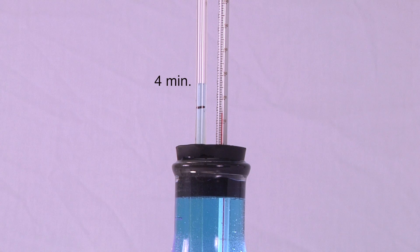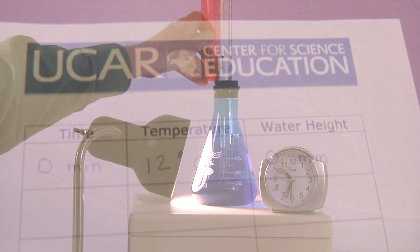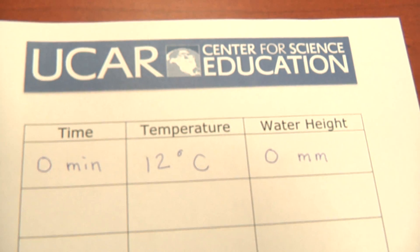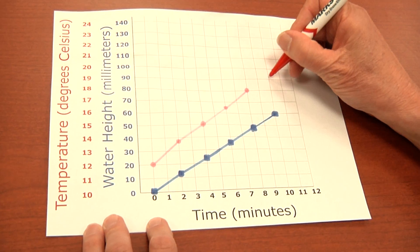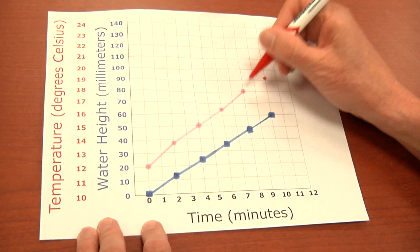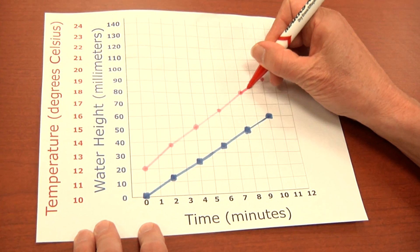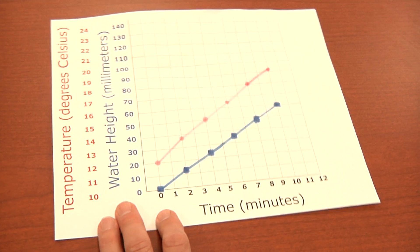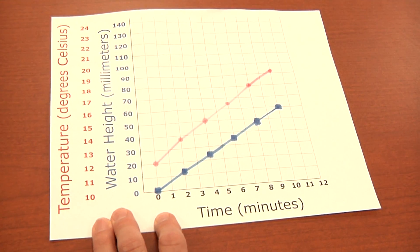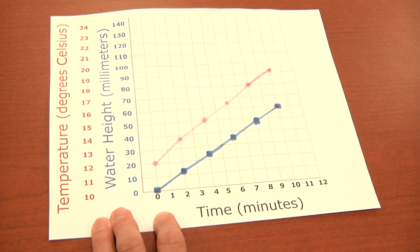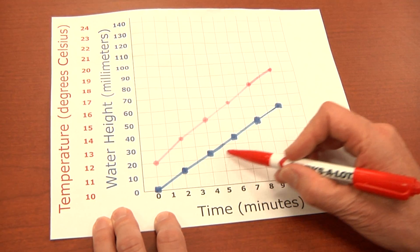Repeat these procedures every two minutes for ten minutes. Record the time, temperature, and height of the water. If you want, have your students graph the water height and temperature versus time. The key point to reinforce with your students is that as the water grew warmer, the water expanded and flowed up the tube.